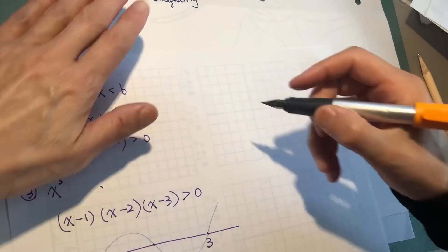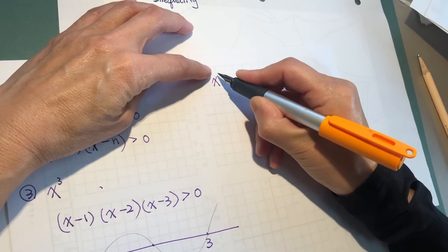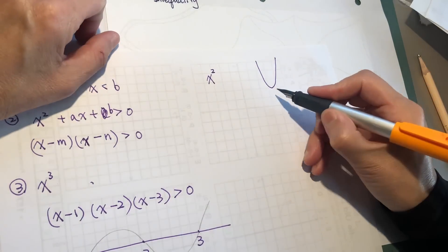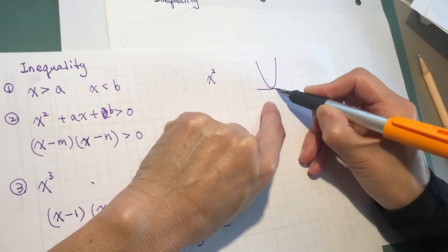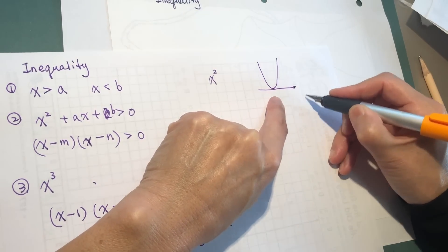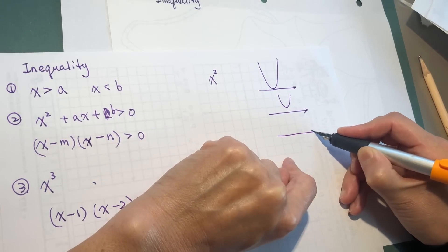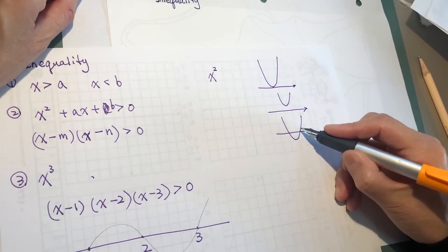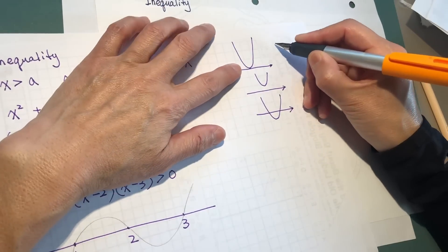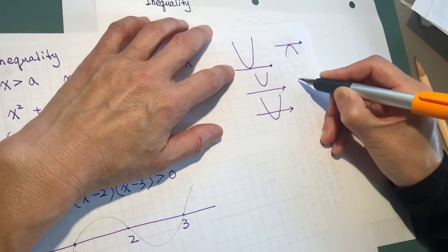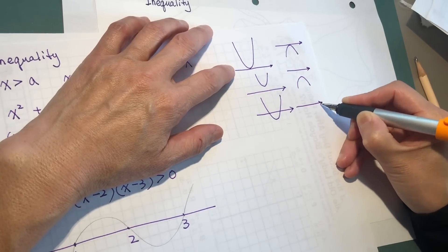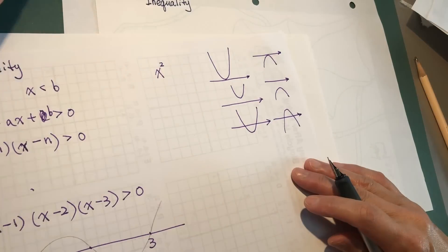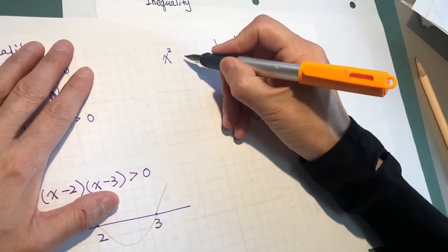I was playing around and found that x to the power of any even number — x to the power of 2 — will produce a certain shape of graph. There could be 1 intersection with the x-axis, 0 intersections, or 2 intersections. Those are the possibilities. The graph goes either this way or this way when it is negative.